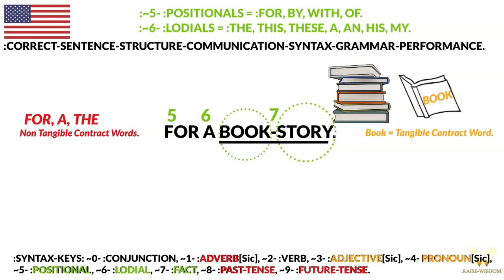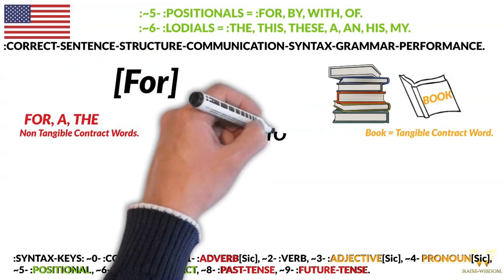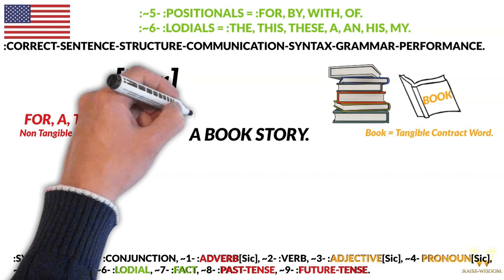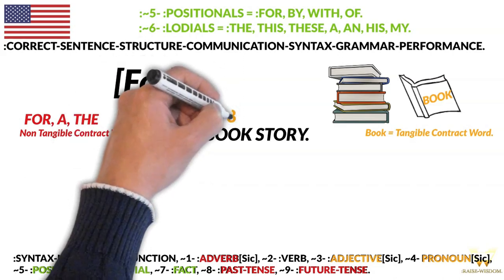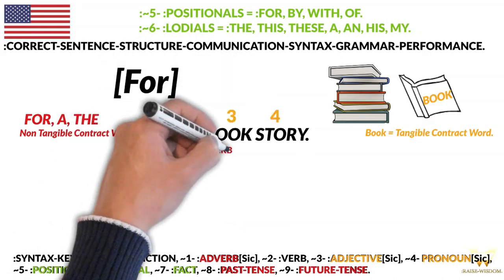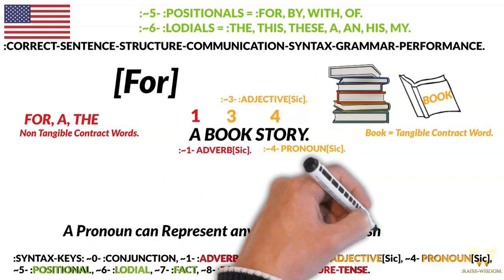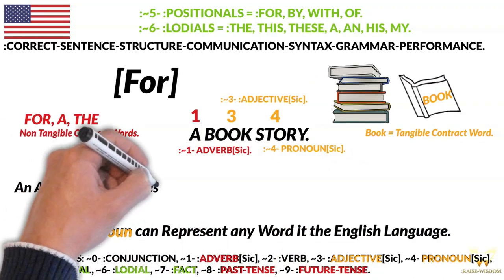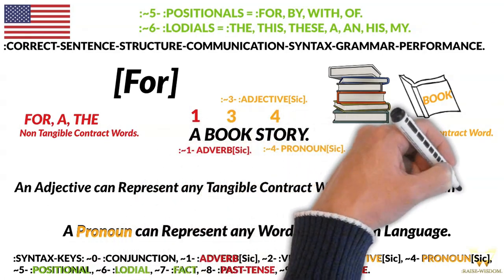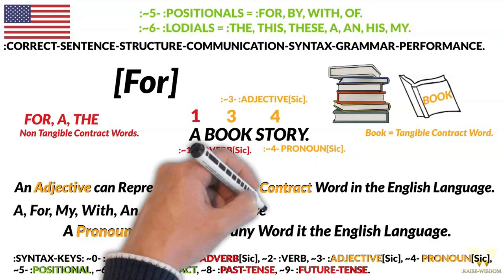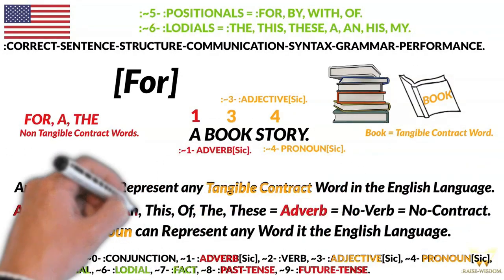Book hyphen story. What happens if I take this word away? Now what happens to the syntax? We have a non-tangible, tangible, tangible — adverb, adjective, pronoun. A pronoun represents any word in the English language. An adjective represents any word in the English language modifying any word in the English language. 'A' is an adverb — it's a non-verb.